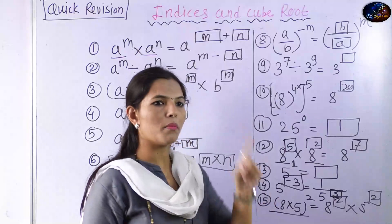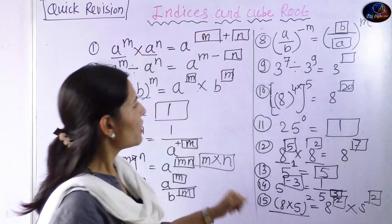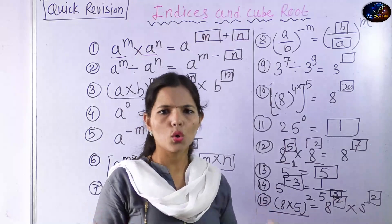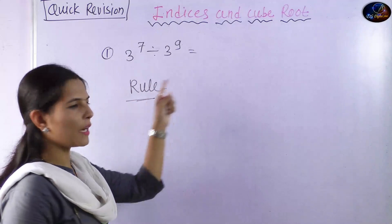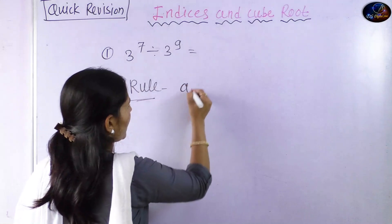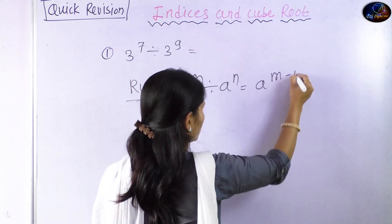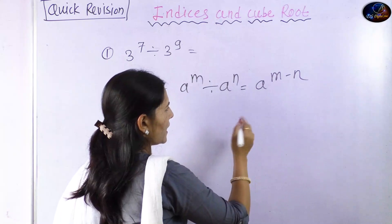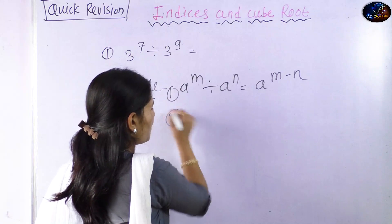For example, 5 raised to 1 equals simply 5. Now, the most important rule to remember: a raised to m divided by a raised to n is equal to a raised to m minus n. But there are two cases depending on whether m is greater than n or n is greater than m.